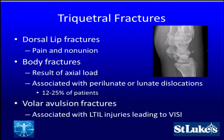Triquetral fractures typically associate themselves with dorsal lip fractures — that little fleck seen on lateral radiographs, which is an avulsion of the ligamentous complex. If it doesn't unite or it's widely displaced, that can lead to pain and nonunion. Triquetral body fractures are typically the result of axial loads through the wrist — almost a fall on an outstretched hand. That's associated at times with perilunate or lunate dislocations in 12% to 25% of patients with triquetral body fractures, so be aware to look for the Gilula lines and arcs of the carpal bones.